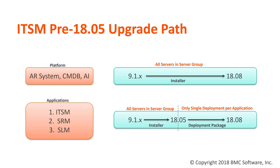For the ITSM stack that is pre-1805, this is the upgrade path. For the platform — AR System, CMDB, or Atrium Integrator — platform components on 9.1.x are upgraded using the installers directly to 1808.